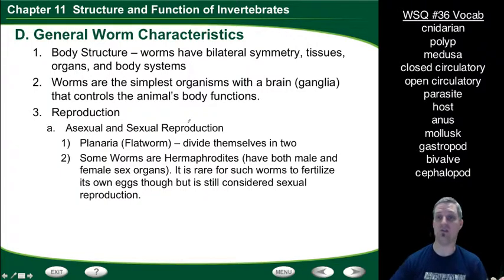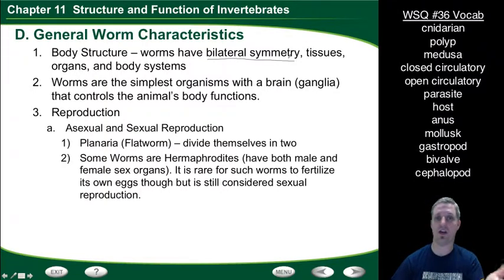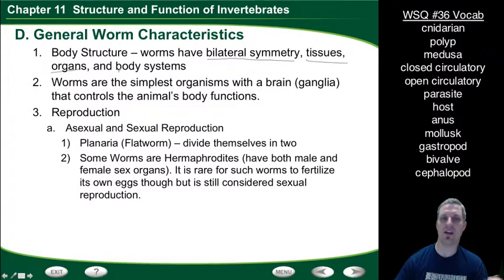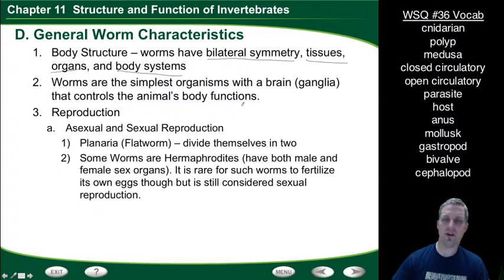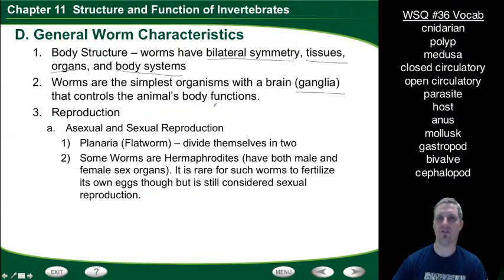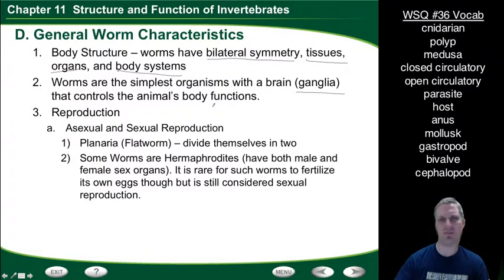Generally, worms have bilateral symmetry — you can divide them straight down the middle to get equal halves. They have defined tissues, organs, and body systems. Worms are the simplest organisms that actually have a brain, called a ganglion. It's small and simple but controls the body functions of the worm. Cnidarians have a nervous system, but it's not concentrated into one brain — it's basically just response mechanisms.